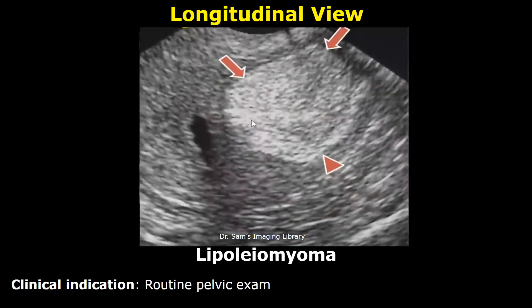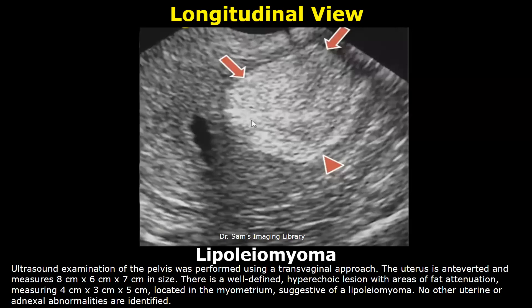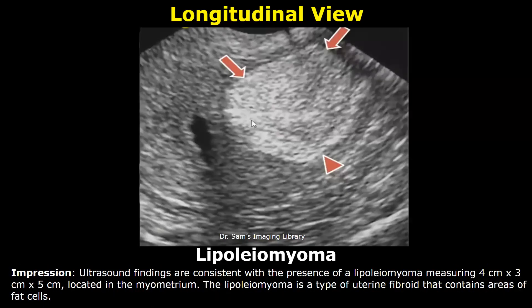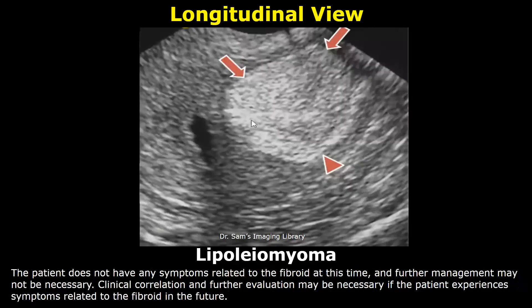This report is of lipoleiomyoma. The indication was routine pelvic exam. In the findings, write: 'A well-defined hyperechoic lesion with areas of fat attenuation,' then its size followed by its location. In the impression, write: 'The findings are consistent with the presence of a lipoleiomyoma,' followed by its size and location. After that, write about the clinical indications and clinical correlation.